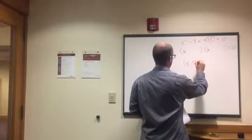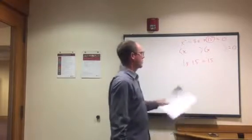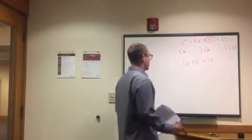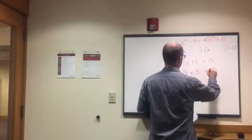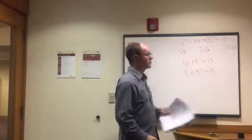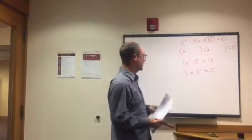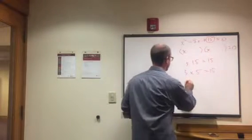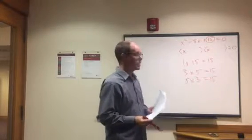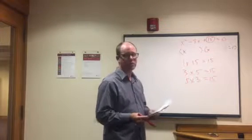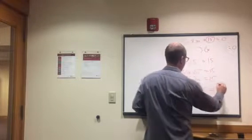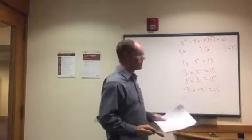With 15, there are really only a few ways. 1 times 15 equals 15, but 1 plus 15 is 16 and we need negative 8 — so that's no good. 3 times 5 equals 15, but 3 plus 5 is 8, not negative 8. What if we made them both negative? Negative 3 times negative 5 equals 15, remembering that multiplying two negatives gives a positive.